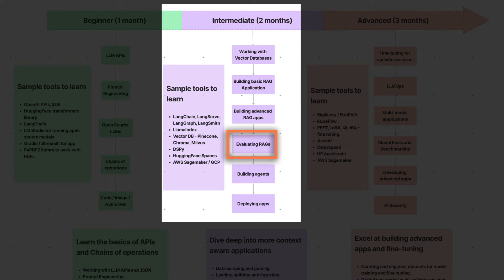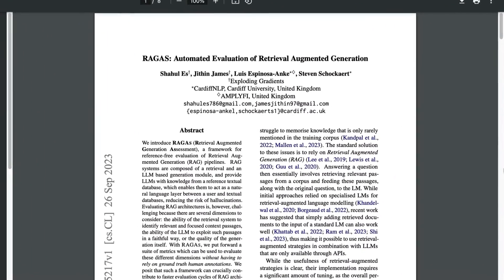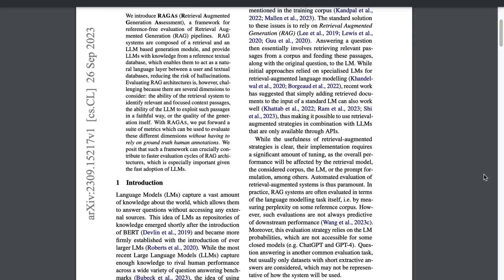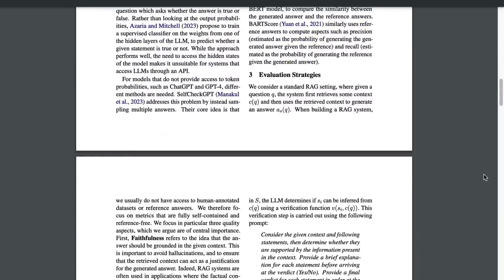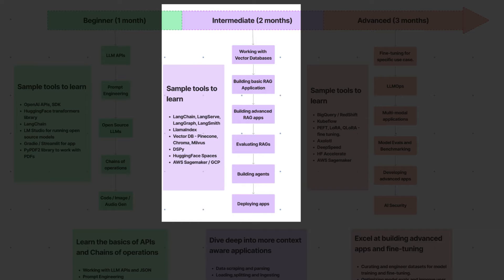Once you build these sort of applications, it's very tricky to evaluate their performance — this is the case with language models all over. Evaluating a RAG pipeline is very tricky, and there are some frameworks you should look to use to incorporate evaluation into your applications. Lastly, there's going to be some ops-related work like managing databases, deploying these applications, monitoring them, and checking their behavior when deployed. Some amount of deployment and DevOps or LLM ops related work is going to be required.